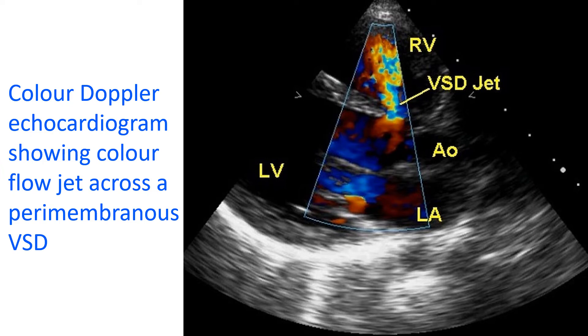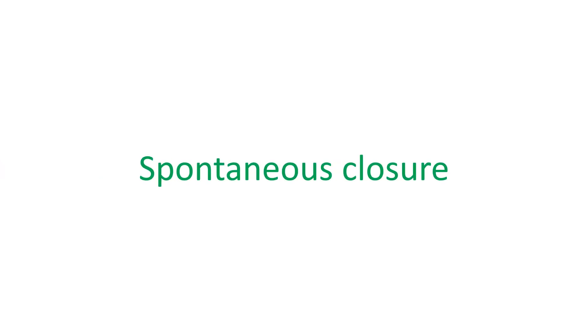Perimembranous VSD can be documented by an ultrasound study of the heart known as an echocardiogram, as shown here. When a perimembranous VSD is detected in a baby, there is a chance that it can close spontaneously over a period of time. The chance for spontaneous closure is more for a small VSD than a large VSD.